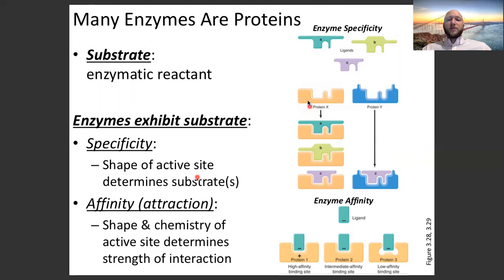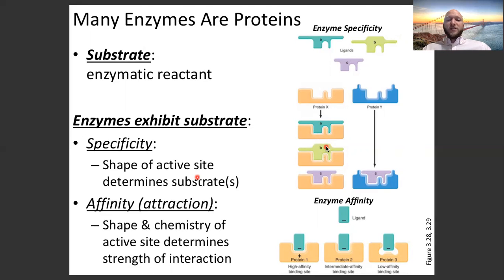Let's look at Protein X — this orange shape. Substrate A interacts with Protein X and we get a good fit, so it's able to catalyze substrate A. Substrate B has a similar shape but with a little mound on top; it's still a good fit and the reaction takes place. Substrate C, even though it doesn't have arms coming off the side, is still able to interact with the enzyme.